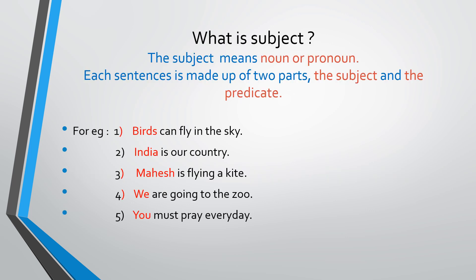What is a subject? The subject means noun or pronoun. Do you know what is a noun and what is a pronoun? Noun means any name of a person, place, animal or thing. And pronoun means you can use it instead of a noun — for example, he, she, it, they, I, we, you, etc. These are the pronouns. This we already completed in the previous lecture. So, noun or pronoun is known as a subject.